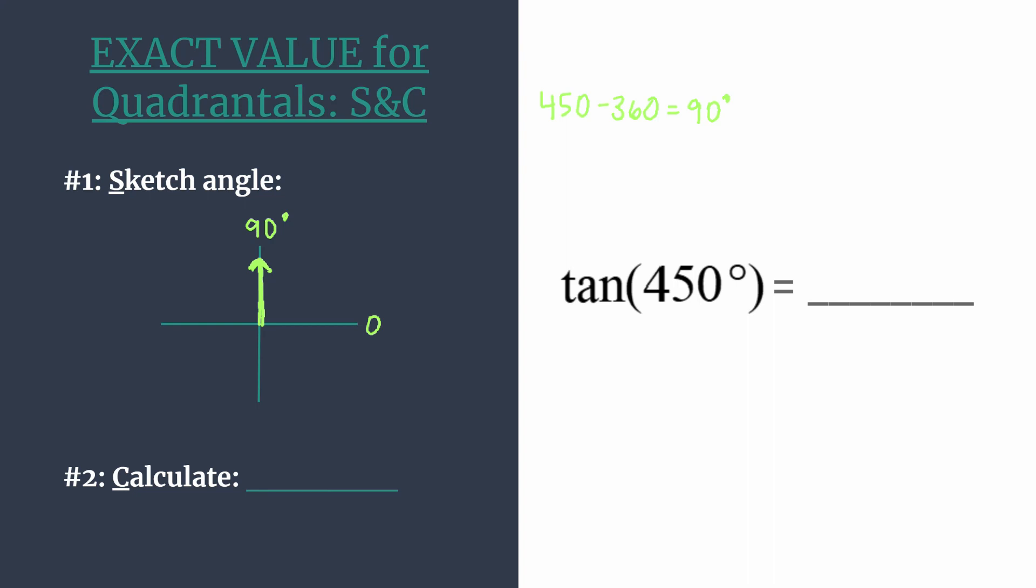Now that we have our terminal side sketched, we can label it with the ordered pair that we want to work with for our calculation of our exact value. And to do this, we should remember that we are working with angles on the unit circle. The unit circle has a radius of one. So we've really just moved up one unit from the origin. And thus, we must be working with the coordinates zero, one.